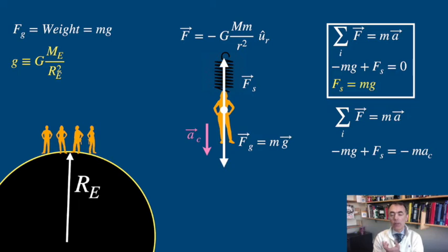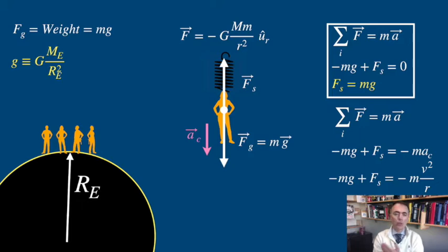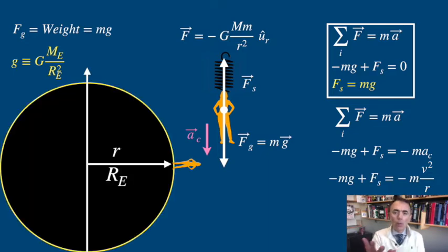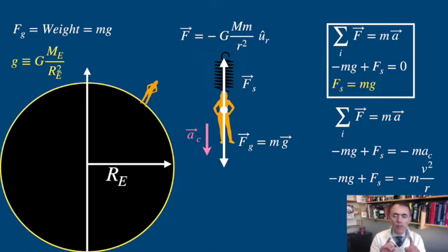This centripetal acceleration is also pointing down to the center of the trajectory, so here it's negative. We also know that this centripetal acceleration is v squared over r, where v is your tangential velocity and r is the radius of curvature. Be careful, as this r is not the radius of the Earth — it is the radius of the circle that is your trajectory. If you were at the equator, then it would be the radius of the Earth, but if you are not, then it is smaller than the radius of the Earth.